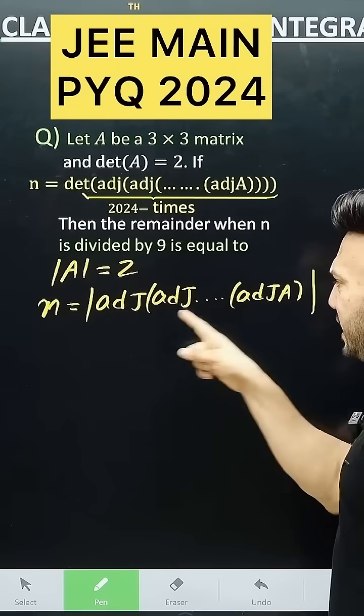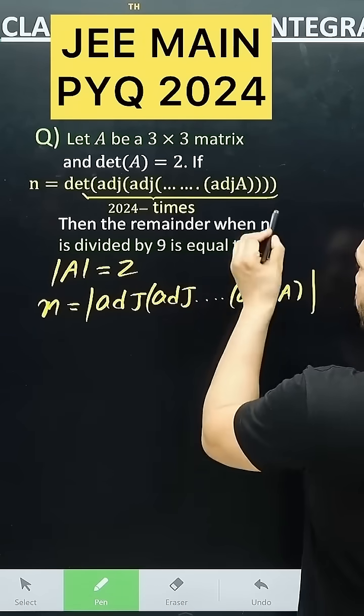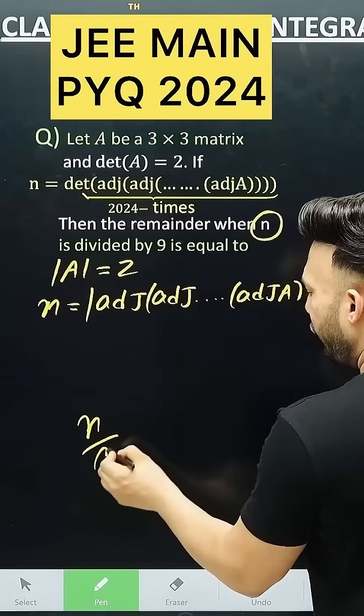What do you have to do? You have to find the value of this n. The value that comes out, divide that n by 9 and then tell what will be its remainder.